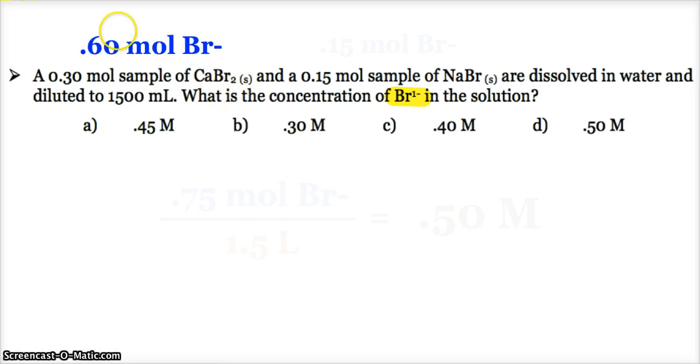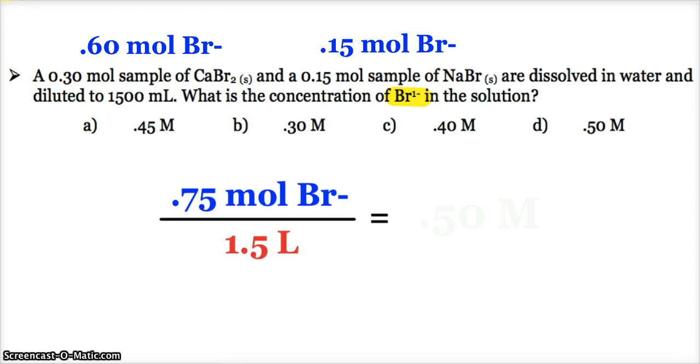So, there is actually 0.6 moles of bromide ions coming from that sample. So, sodium bromide, 1 bromide, so I'm still getting the same amount of moles, 0.15 moles. So, as far as the concentration of bromide, it's 0.75 moles of bromide that are going into this solution, divided by my 1.5 liters, and that's why my answer, I'm going to choose the 0.5 molar.